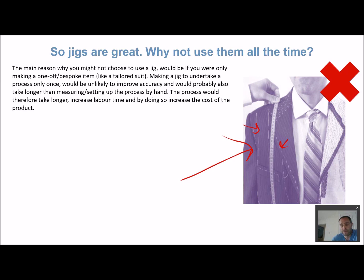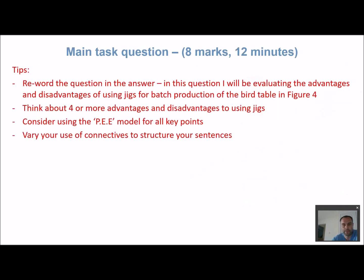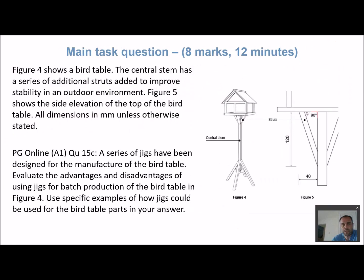If you're making only one item, it's very unlikely you'd want to use a jig. Another minor disadvantage is wear and tear — if you continually use a jig there's a chance it could wear and accuracy could be affected slightly. However, if you're properly controlling the quality and setup of the jig, this shouldn't really happen, so it's something to factor in rather than a major disadvantage.